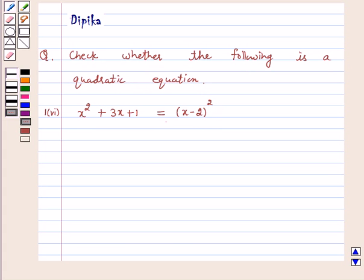Let's start the solution. Our given equation is x squared plus 3x plus 1 equals x minus 2 whole squared.